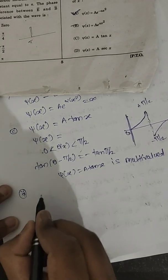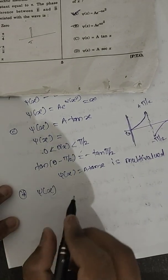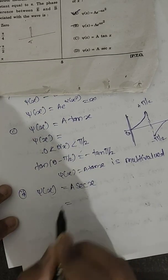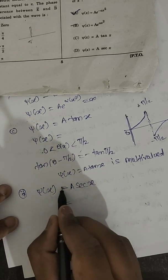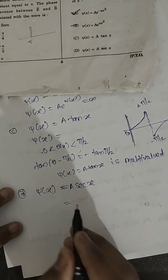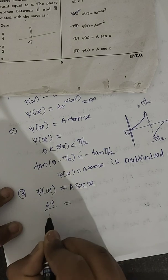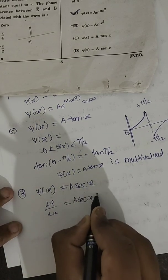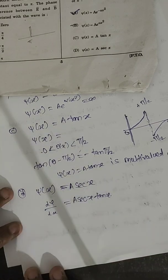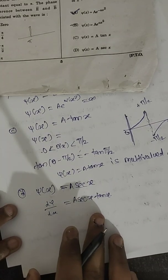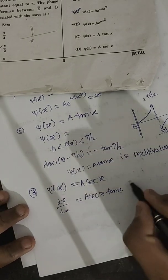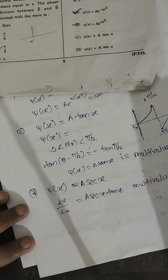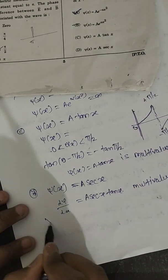Option D: psi of x is equal to A sec x. While sec x itself may appear single-valued, when we compute d-psi by dx we get A sec x times tan x, which is a multi-valued function. So the derivative is multi-valued, meaning this option is also wrong.